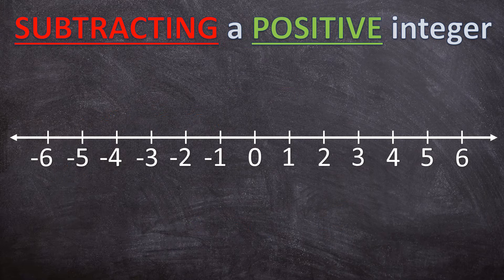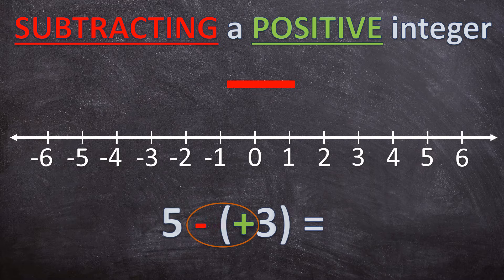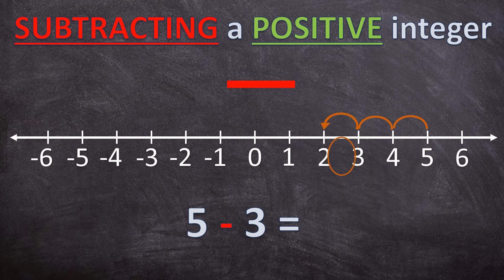Now let's look at the third rule. When we are subtracting a positive integer, we are simply going to subtract the integer. Let's look at a few examples: 5 minus positive 3 is simply going to be 5 minus 3. Let's look at that on the number line — 5 minus 3 is equal to 2.